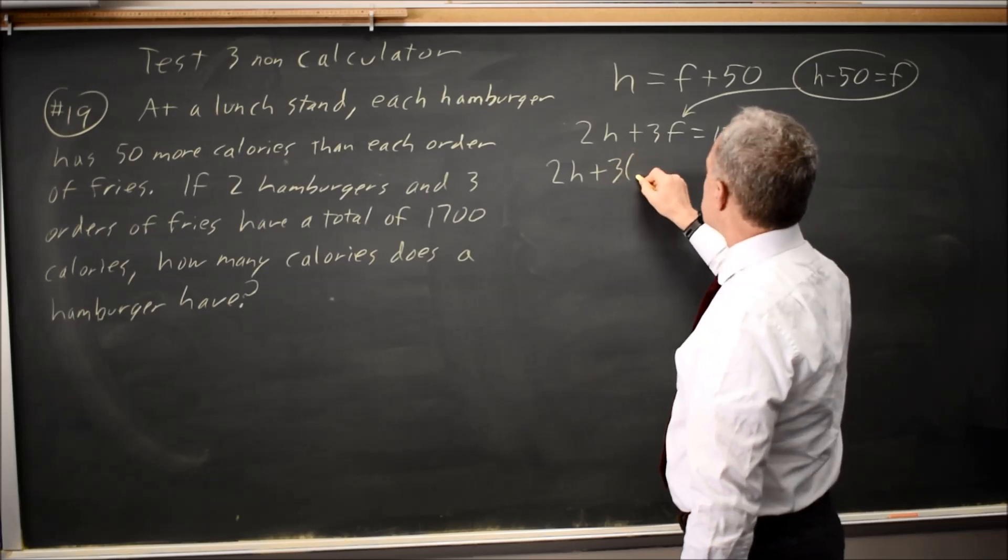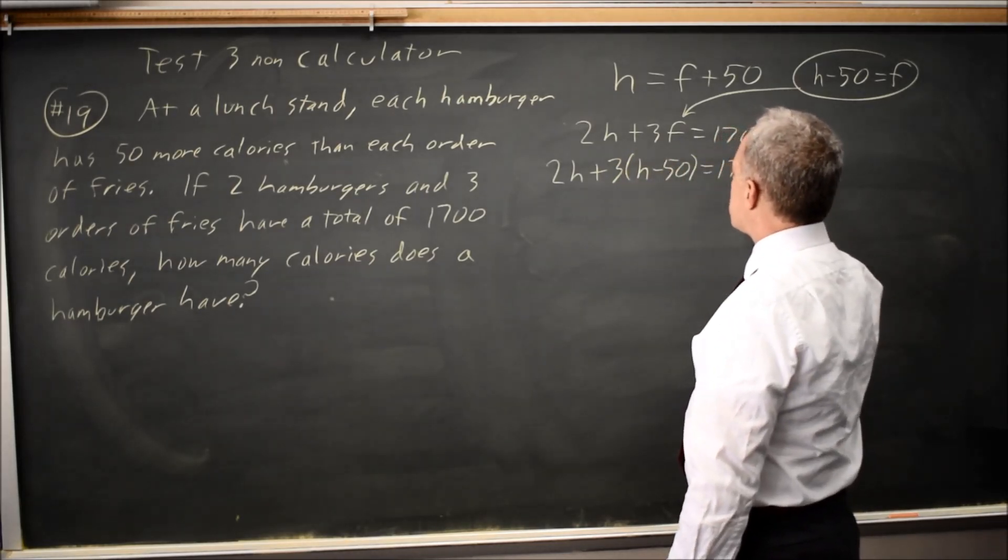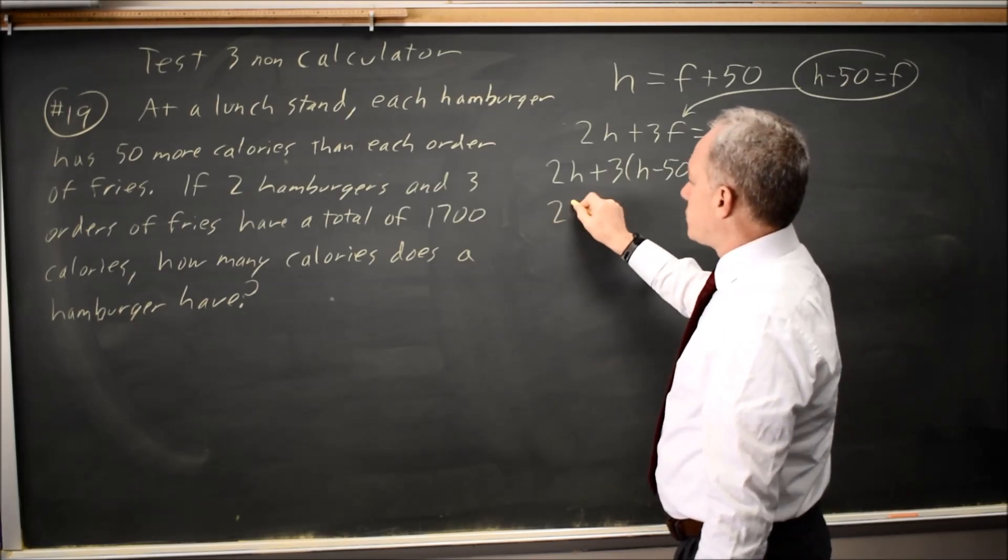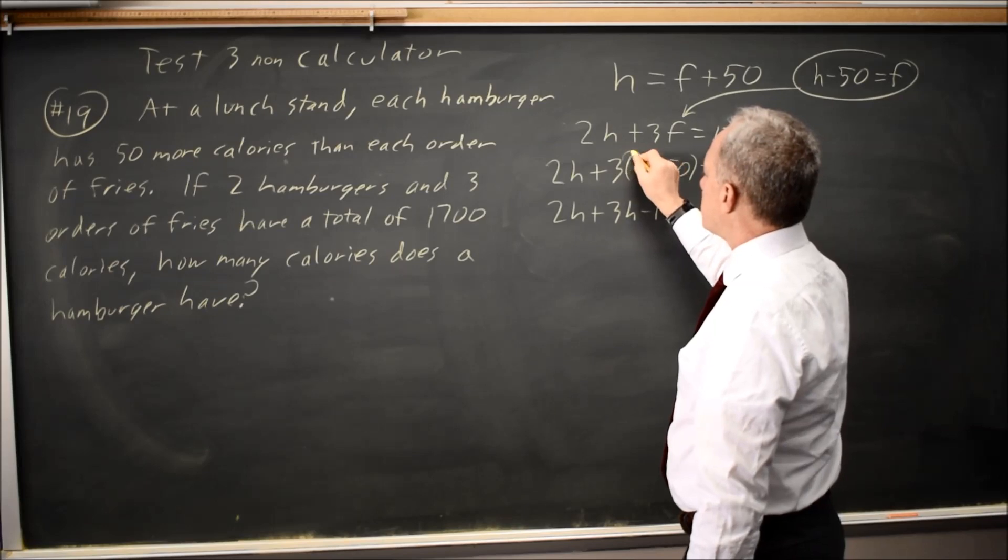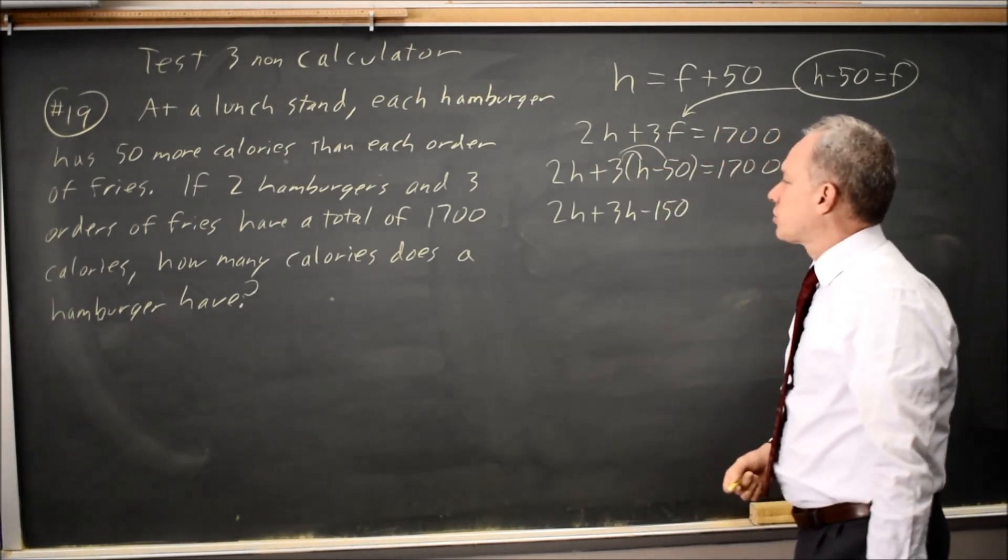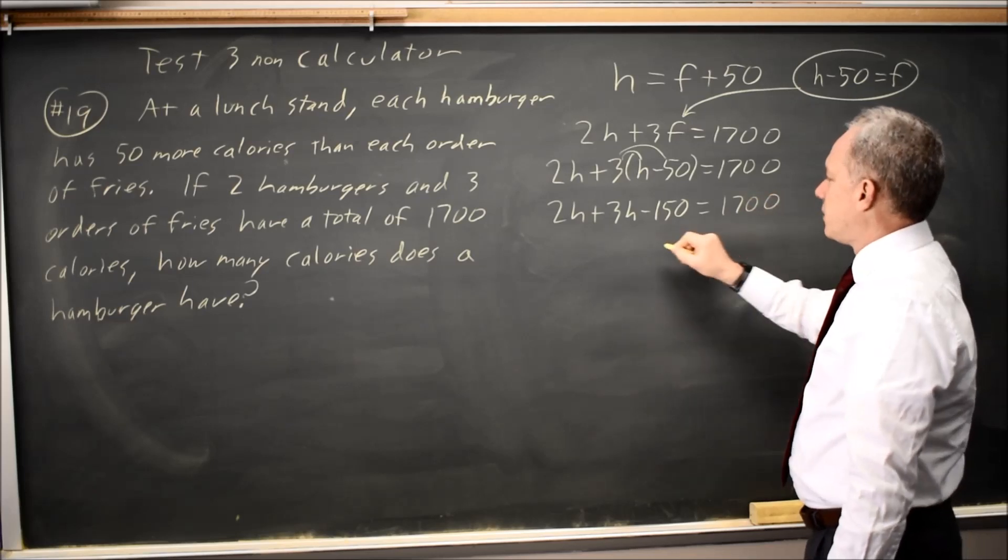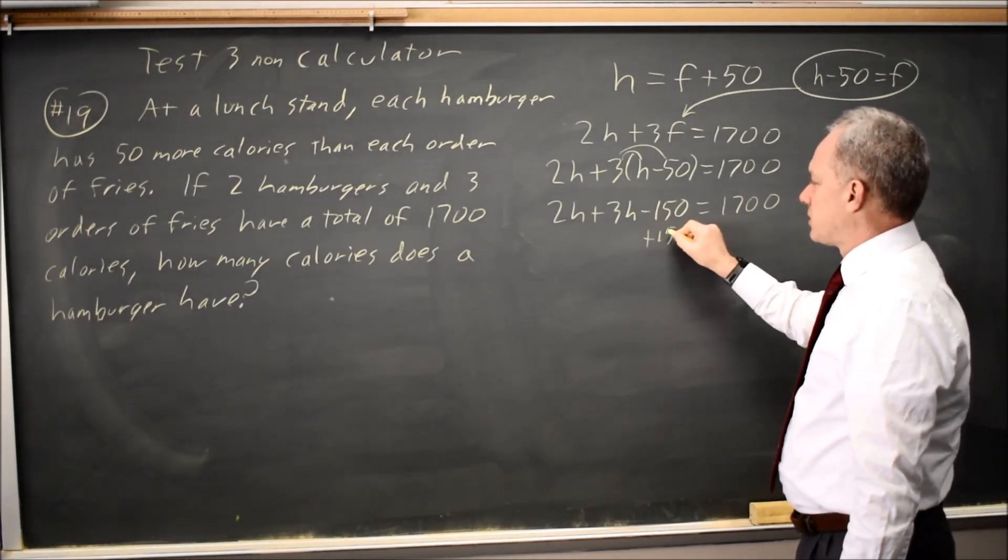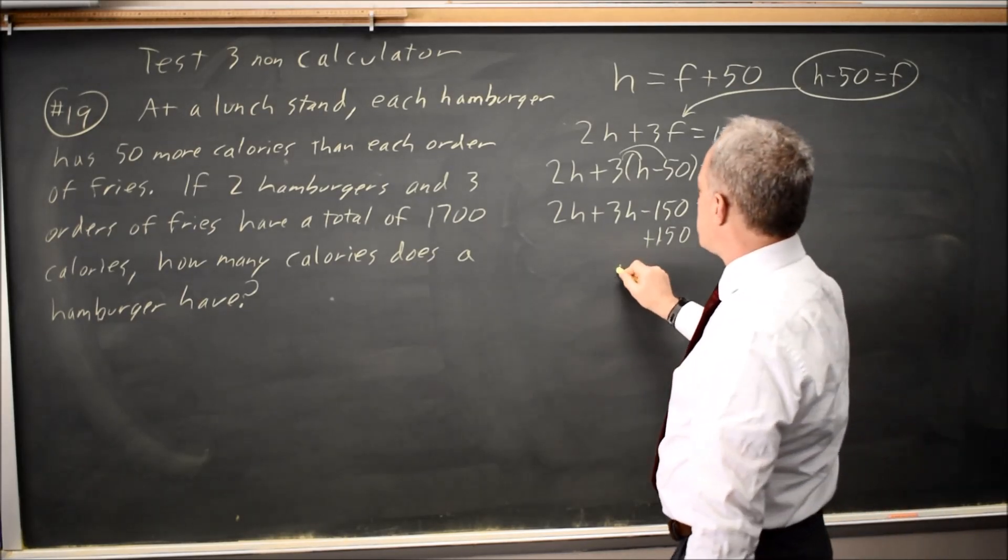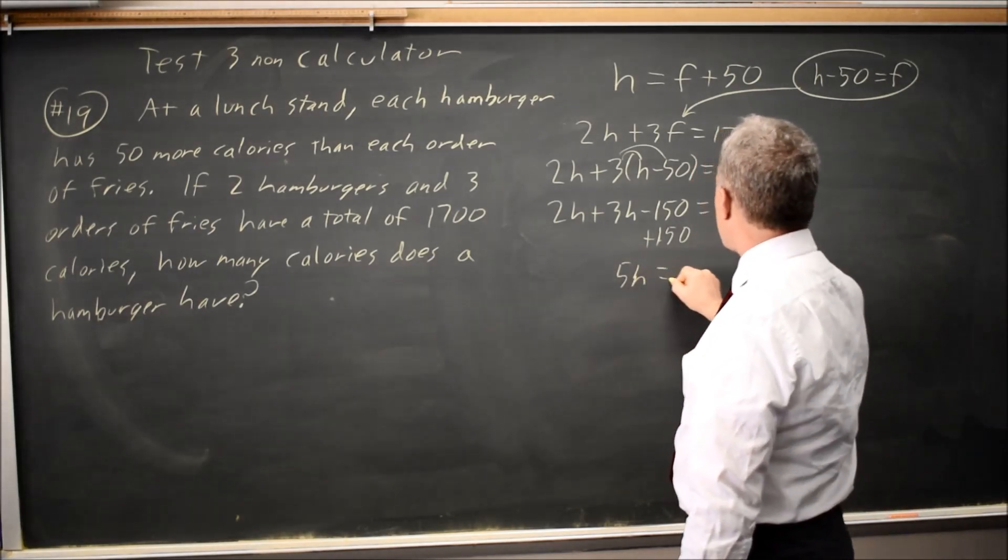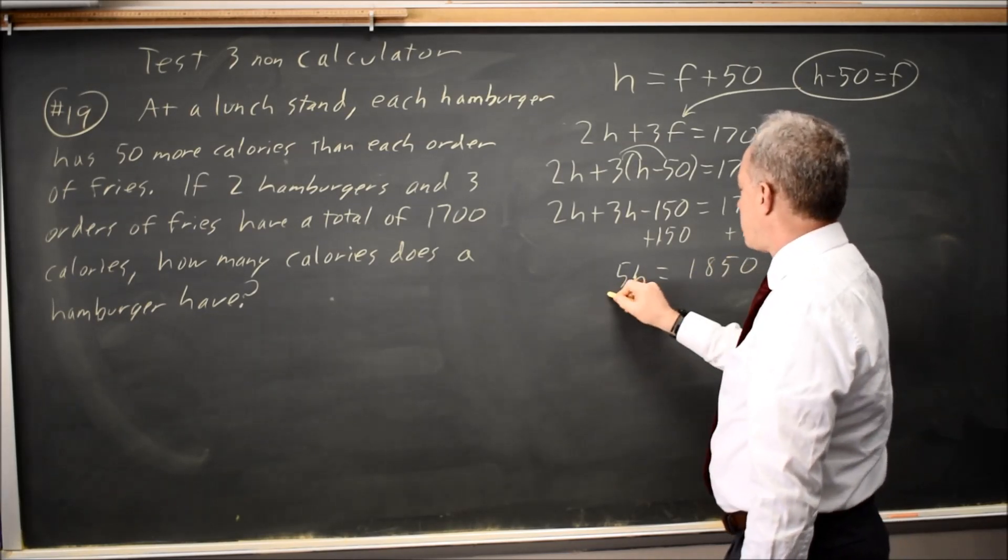2H plus 3 times H minus 50 equals 1,700. Distributing I get 2H plus 3H minus 150. Make sure you distribute the 3 to both the H and the negative 50, and that is 1,700. Add 150 to both sides. 2H plus 3H is 5H equals 1,850. Divide by 5.